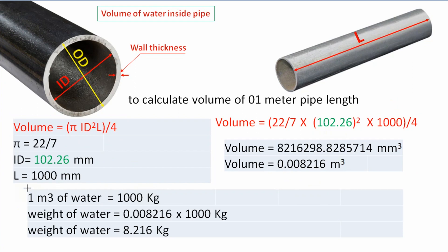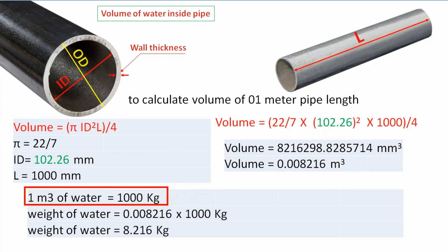As we know, 1 cubic meter of water equals 1000 kilograms. Since we calculated our volume in cubic meters, we multiply this volume by 1000. We get the weight of water equal to 8.216 kilograms. This is the weight of water in a 1 meter length of pipe.